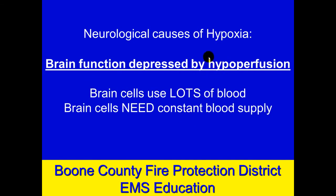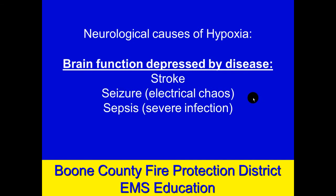Brain function could also be depressed by hypoperfusion — just not getting enough blood flow. The brain needs lots of oxygen and glucose, and it gets those from the bloodstream. Neurological causes also include strokes in certain parts of the brain, or a seizure — simply brain function gone wild, electrical chaos — so the brain is not controlling anything well. Severe infection, sepsis from pneumonia, a urinary tract infection, or other infectious agents can also cause the brain to not function well.